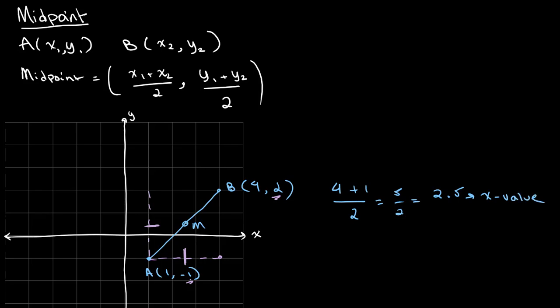For the y values we do the same thing — add them together and divide by 2. We get 2 plus negative 1, divided by 2, which gives us 1 over 2, equal to 0.5. This is our y value.